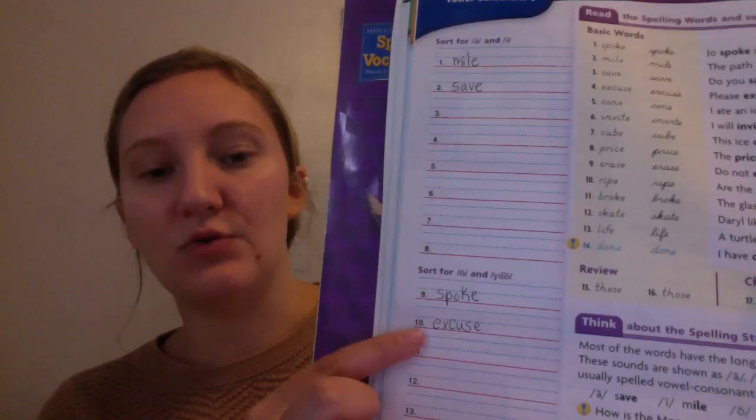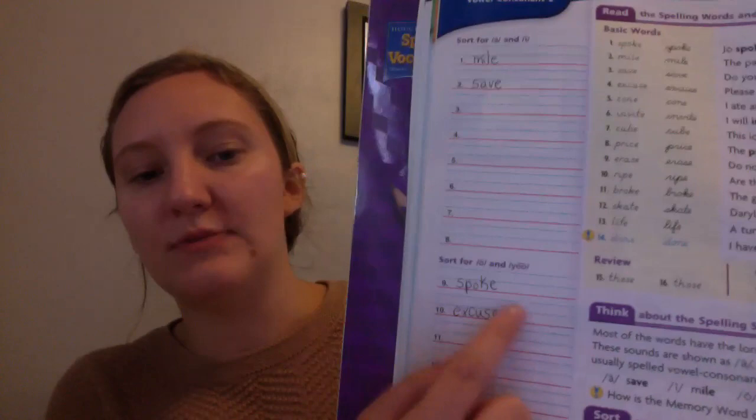Down here it says sort for long O sounding words and U. Like excuse or spoke. Spoke has a long O. Excuse makes this U sound.